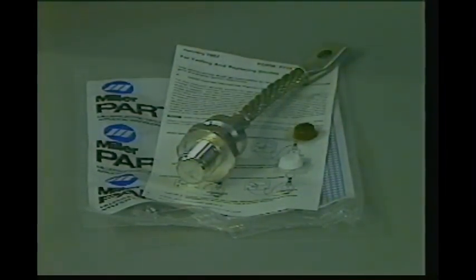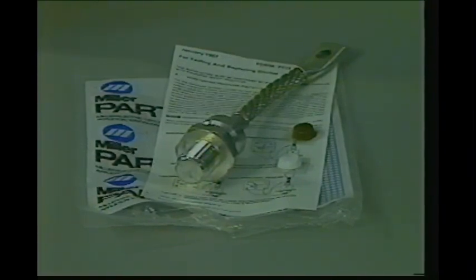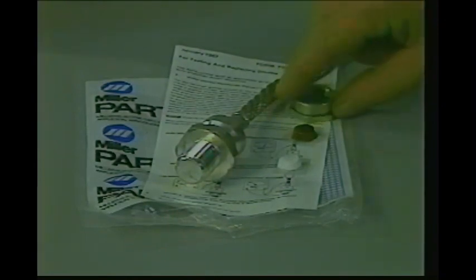There is a package of dissimilar metal compound. This will be used on the pigtail of the diode to prevent corrosion at the point of connection and the breakaway nut.